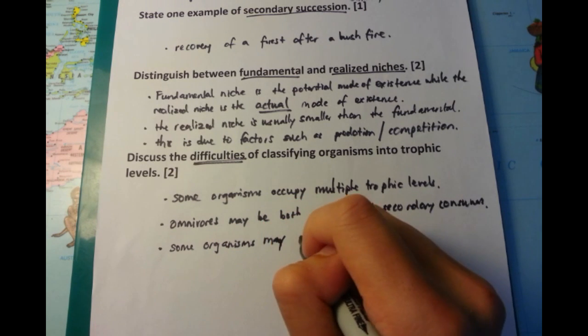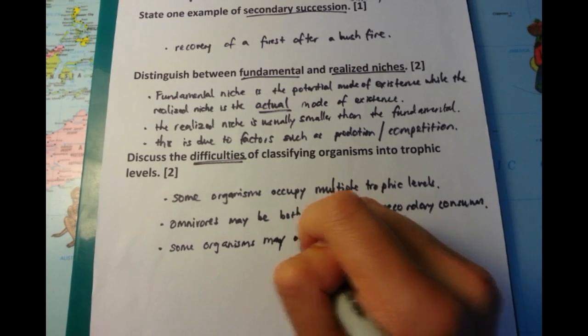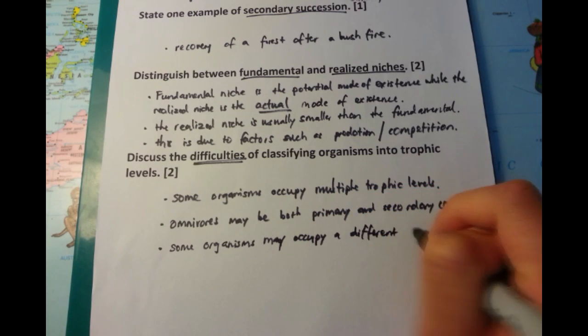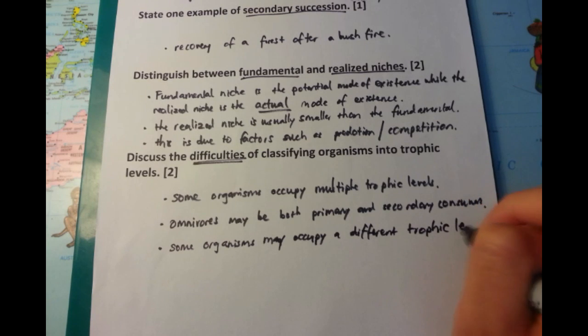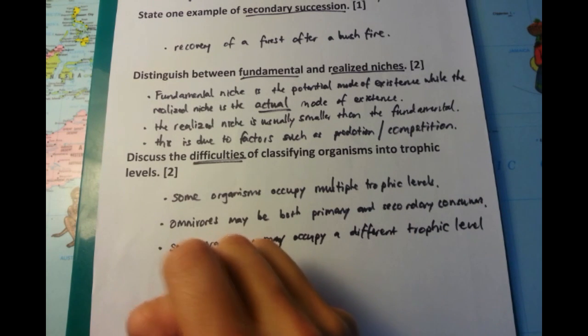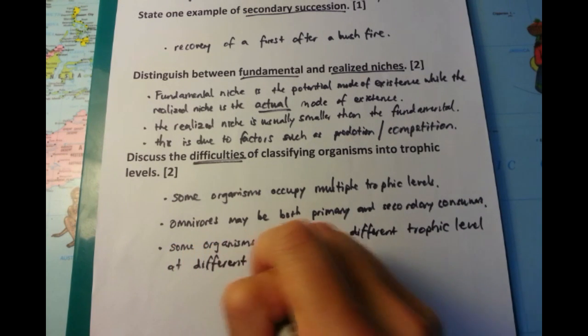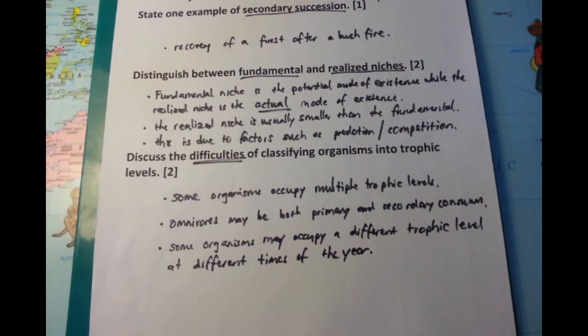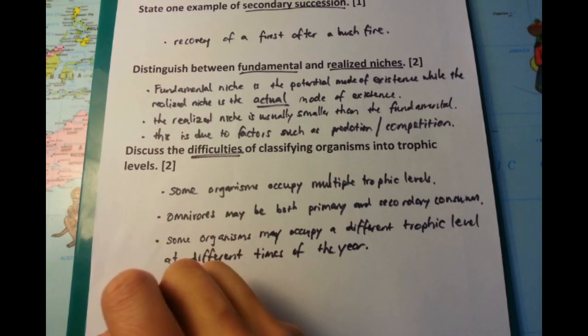A third point. Well, the fact that some organisms may occupy a different trophic level at different times of the year due to availability of different kinds of food. That is a particular pertinent point because in an environment, it's not like the food source will be the same for organisms at all years in time. And this is evident even with humans as well.